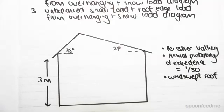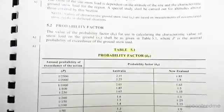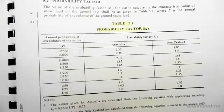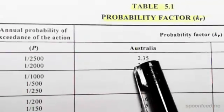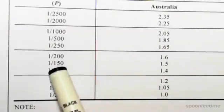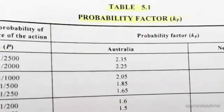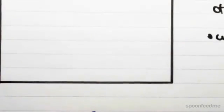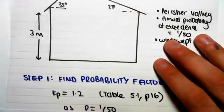So the first thing we're going to be doing is finding the probability factor kp. If we go to page 16 and we go to table 5.1, let me just zoom in for you guys. So 5.1, probability values in Australia. We've been told the annual probability of exceedance was 1 in 50, so we're down here. We go across, we get a kp value of 1.2. So kp is 1.2, we just found that.